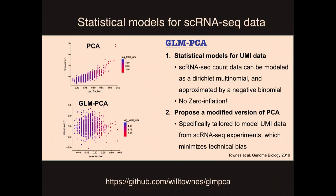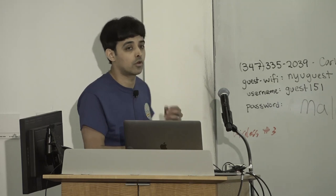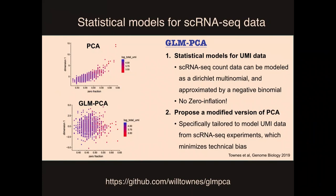A really nice example is from Will Towns and Rafael Rosari's lab. He developed a method called GLM-PCA. His results closely agree with Valentin's — he argues that single-cell RNA-seq count data can be modeled with a Dirichlet multinomial distribution, approximated by a negative binomial, all without zero inflation. He then proposes a modified version of PCA tailored to exactly the statistical distribution of single-cell RNA-seq data. They show that if you run regular PCA, the first principal component correlates strongly with total number of genes detected; if you run GLM-PCA, that problem goes away.